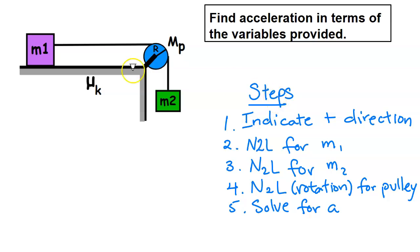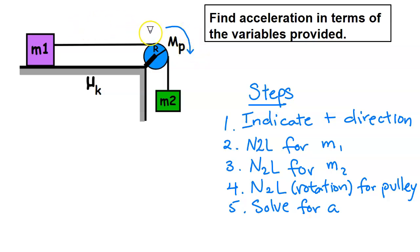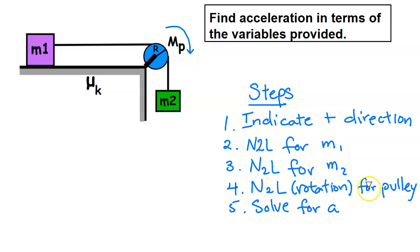The steps we're going to use to solve for the acceleration in terms of the variables are: first, indicate the positive direction — positive will be to the right on the table and downward for the hanging mass. Then write Newton's second law for mass one, Newton's second law for mass two, and the rotational version of Newton's second law for the pulley, then solve for acceleration.